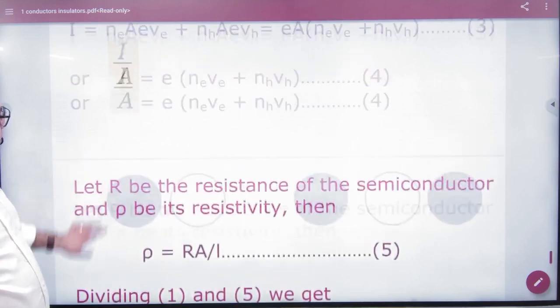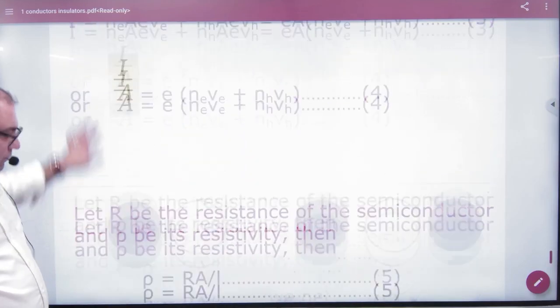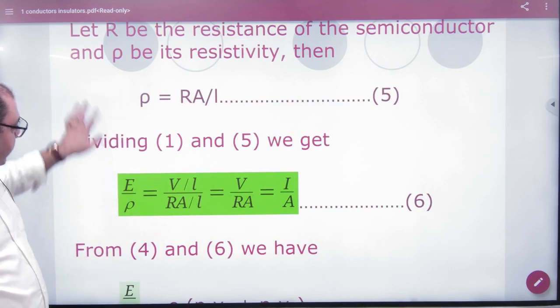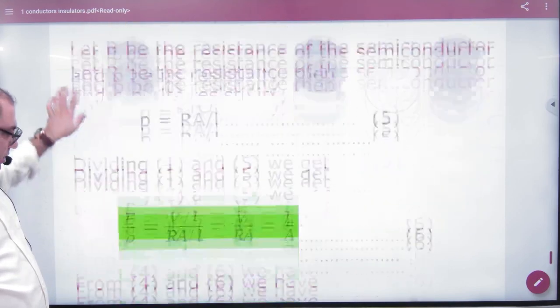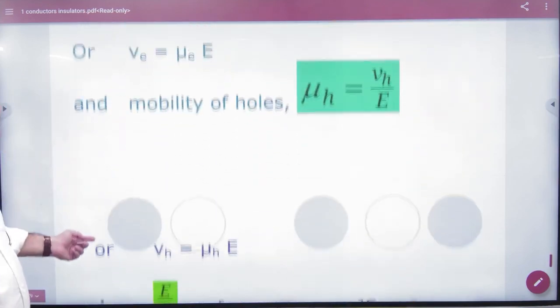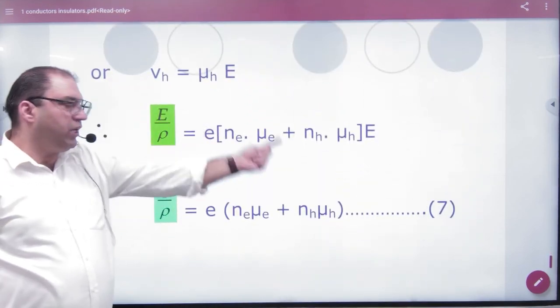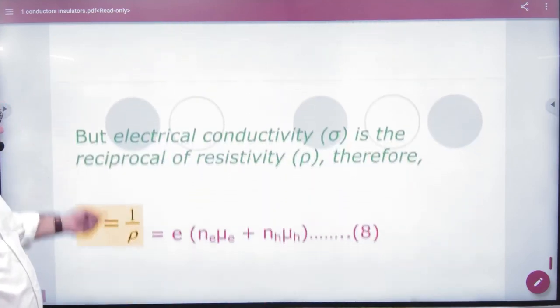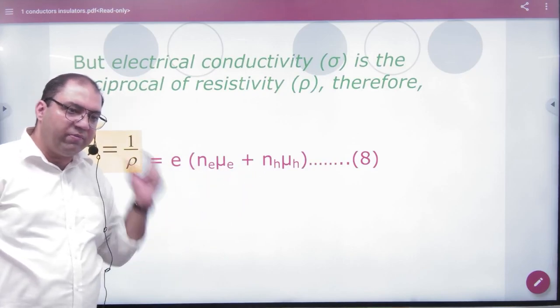So one by rho value, so what have you done? I by A ratio, then you divide them. I by A is E by rho. VE, VH value from mobility, E and E cancel. One by resistivity is conductivity, so sigma formula you can write.